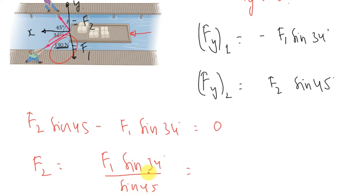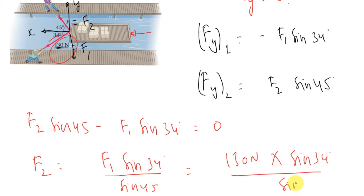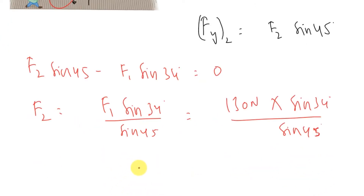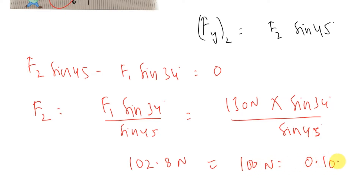From that equation, F2 equals F1 sin(34°) divided by sin(45°). Substituting F1 = 130 Newtons, sin(34°), and sin(45°), on solving we get F2 equals 102.8 Newtons, which can be taken as approximately 100 Newtons or 0.10 kilonewtons.